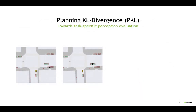We propose Planning KL Divergence, which leverages planning to penalize detection mistakes in a task-specific, context-dependent way. The intuition of PKL is that misdetecting the car on the road is worse because it causes the car to plan differently.